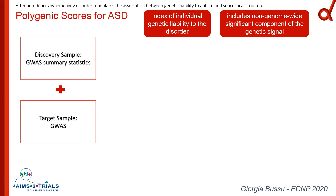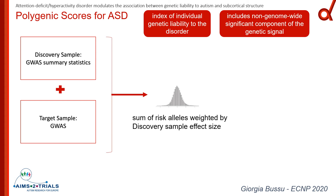Then you have a target sample — your sample of interest — and the GWAS from which you want to compute polygenic scores. You tend to match the two samples; the more similar they are, the better. But you can even use different phenotypes or sub-disorders. What you then do is limit the SNP list to those with association p-values less than a specific threshold, choosing different thresholds, and generate the genomic profile scores in the target sample. These profile scores are the sum of risk alleles weighted by the effect size from the discovery sample.